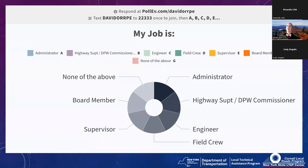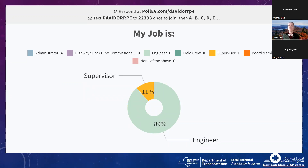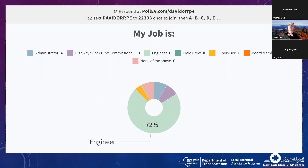What's your job? Are you an administrator, a highway superintendent or DPW commissioner, an engineer, in the field, a supervisor, or an elected board member? If none of the above, put that in the Q&A. About three quarters of you are engineers — good to know.